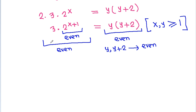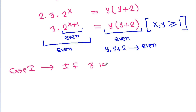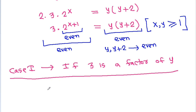On the left-hand side we have 3 as a factor, and on the right-hand side we have y and (y+2). That means 3 can be a factor of y or of (y+2). Case 1: if 3 is a factor of y, we have 3 times 2^(x+1) equals y times (y+2) where 3 divides y.